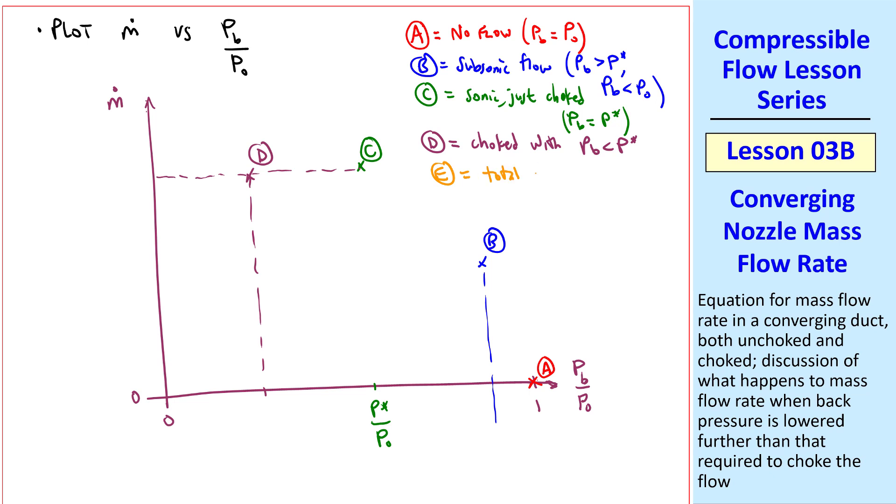Finally, E is a total vacuum with P_B equals zero. That would be here. And again, the mass flow rate does not change anymore. The curve of mass flow rate connecting these points will look like that. Mass flow rate increasing as P_B decreases until we reach sonic conditions, and from there on mass flow rate remains constant. This is what we call m-dot max, or m-dot choked.